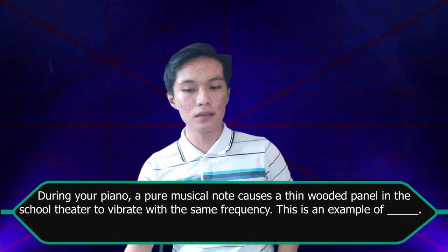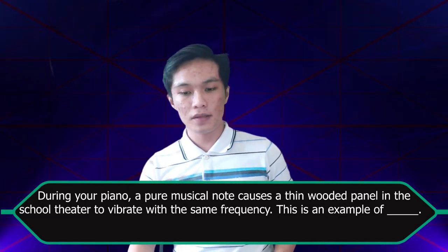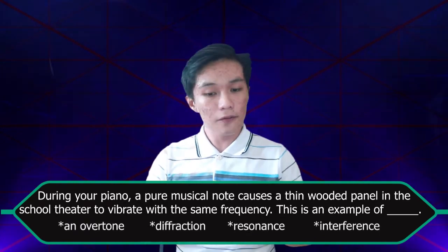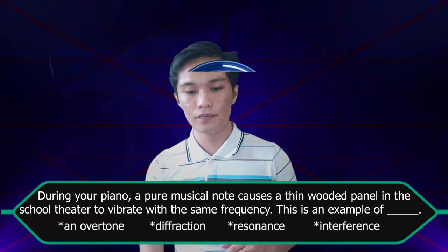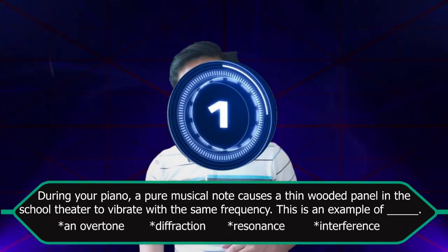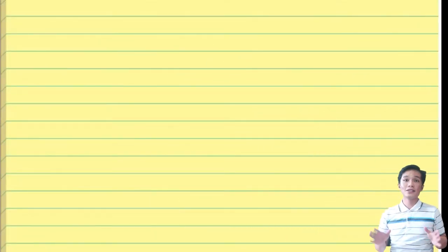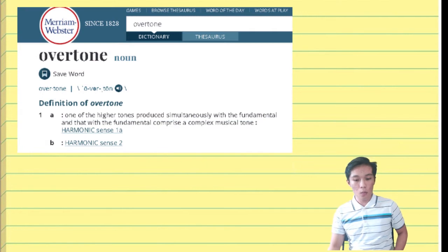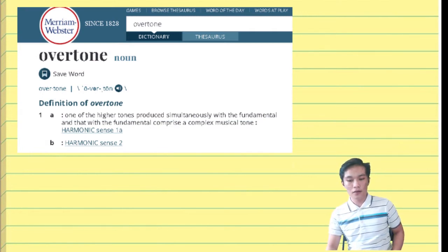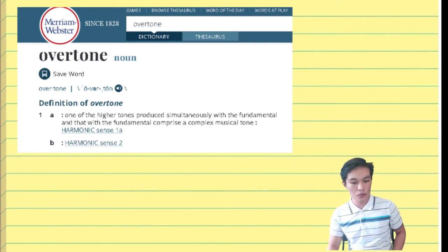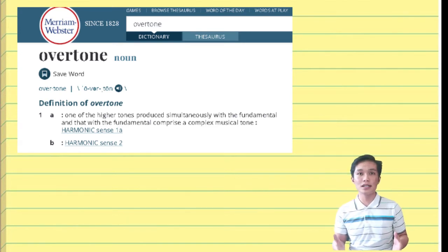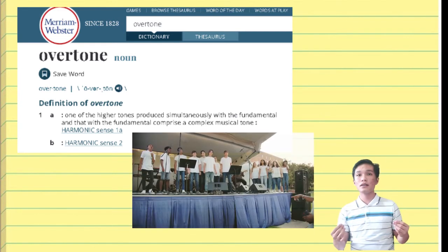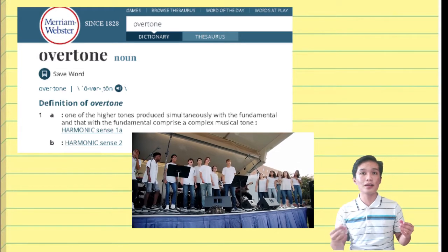For the next problem: during your piano recital, a pure musical note causes a thin wood panel on the school theater to vibrate with the same frequency. This is an example of overtone, diffraction, resonance, or interference? To understand this, we need to know what these terms are. An overtone is one of the higher tones produced simultaneously with the fundamental tone, comprising a complex musical tone — essentially a tone layered over another tone, like in choir harmonies.